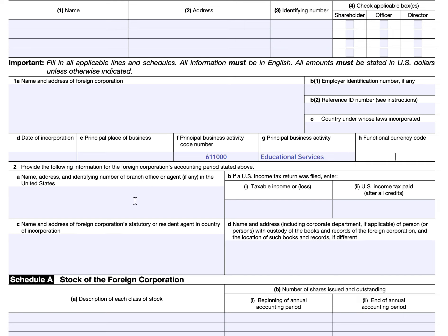In Section 2, you're going to provide information about the corporation's accounting period. If there's a branch office in the United States, enter that in 2A. If there is a U.S. tax return, enter the taxable income or loss followed by the income tax paid after all credits. In 2C, enter the foreign corporation's agent in the country that it's incorporated in, followed by name and address.